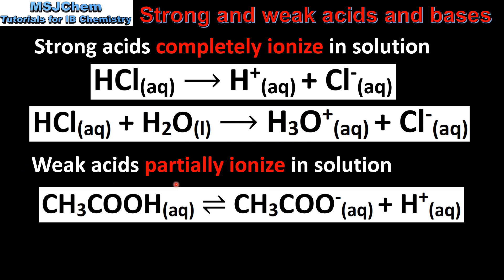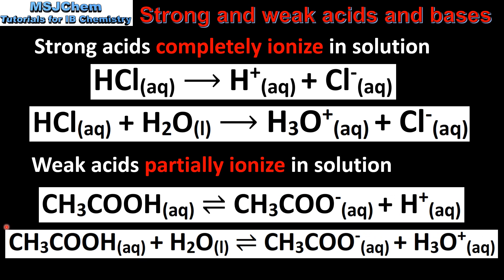Weak acids partially ionize or dissociate in solution. Here we have ethanoic acid dissociating to form the ethanoate ion and a hydrogen ion. The same reaction can also be shown with the water molecule in the reactants and the hydronium ion in the products. For weak acids we use the equilibrium sign.